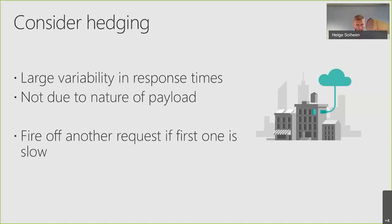There is also a technique called hedging. Because there is large variability in response times, sometimes things will just be slow. What you can do is fire up another request if the first one is slow. Google used this in their Bigtable implementation, where they managed to get their 99.9th percentile down from 1,800 milliseconds to 74 milliseconds by issuing just 2% additional queries. So by adding 2% more queries when things were going slow, they really improved user experience. That's something to consider.